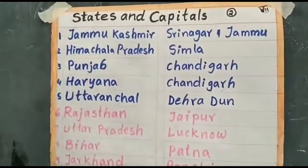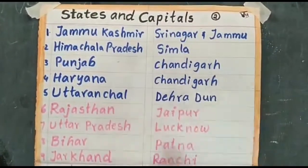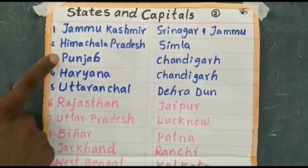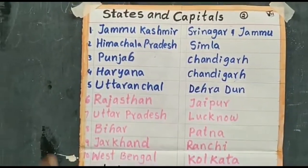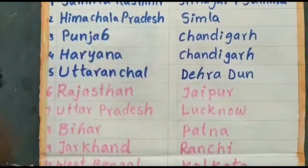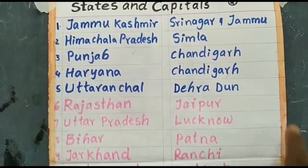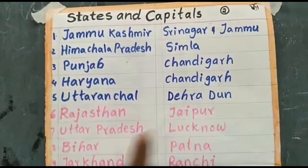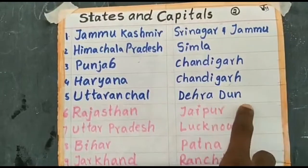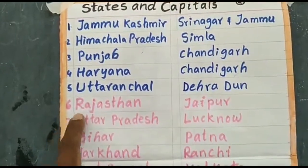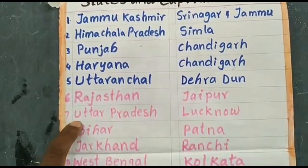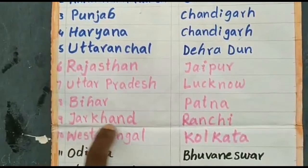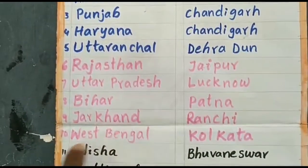First: Jammu and Kashmir — capitals are Srinagar and Jammu. Himachal Pradesh — capital city Shimla. Punjab — capital city Chandigarh. Haryana — capital city Chandigarh also. Uttarakhand — capital city Dehradun. Rajasthan — capital city Jaipur. Uttar Pradesh — capital city Lucknow. Bihar — capital city Patna. Jharkhand — capital city Ranchi. West Bengal is next.